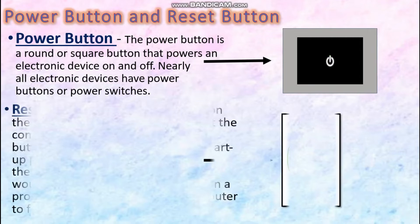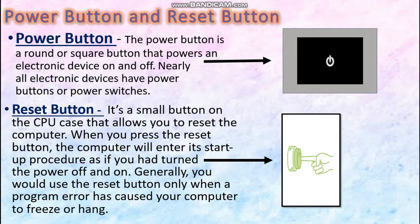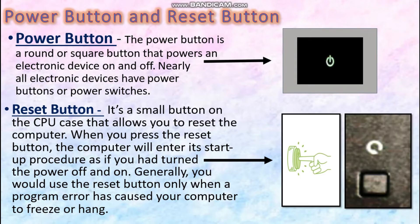Now we go to another important button, which is your Reset Button. It is a small button on the case of the CPU. It helps to reset a computer. For example, if I am working on an Excel sheet and I cannot type nor can I move my cursor because the computer has got frozen or hanged, in such a condition the reset button comes into use. On pressing the reset button, the device or the computer gets restarted.